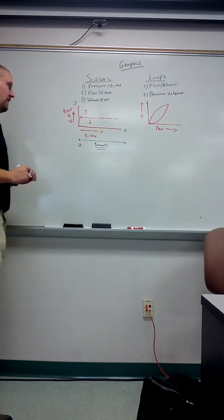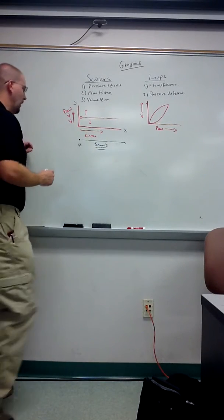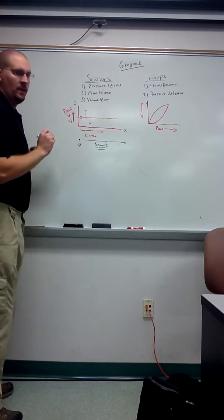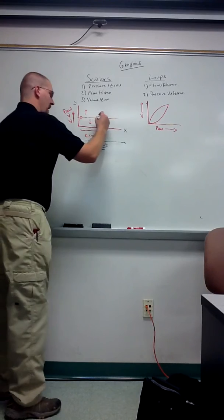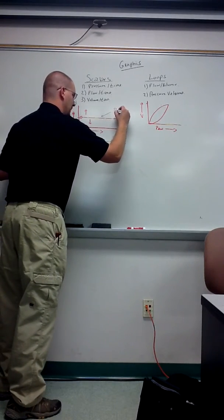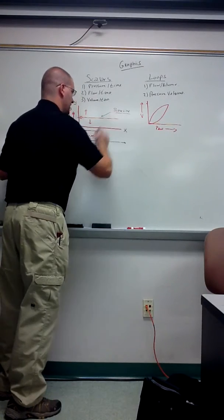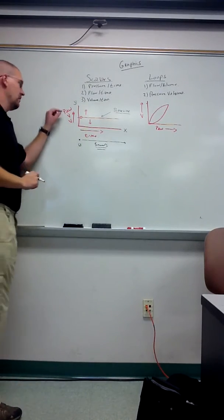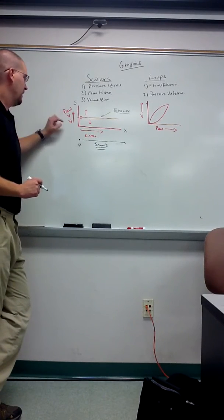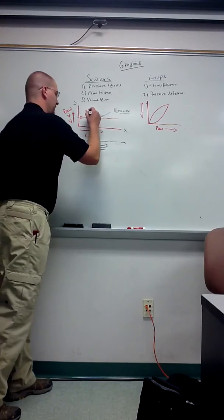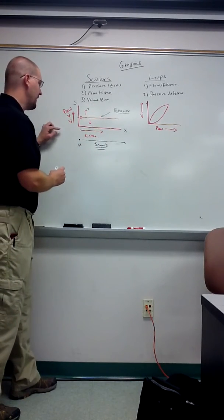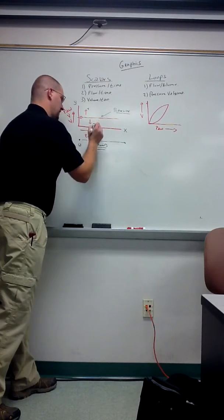When I look at the scalar, I'll have some point that's called the baseline. This is where we have zero—zero at the baseline. It could be zero pressure, zero flow, or zero volume. If I go above the baseline, that is going to be a positive number. If I go below the baseline, that will be a negative number.